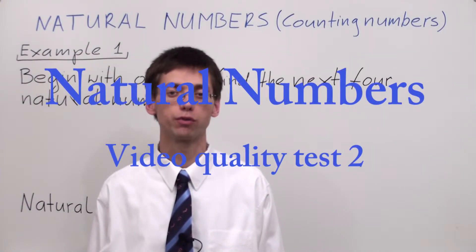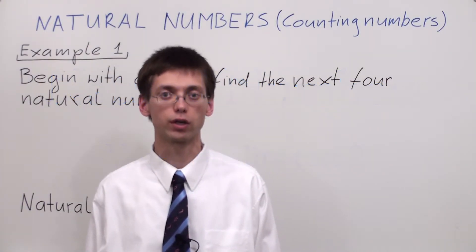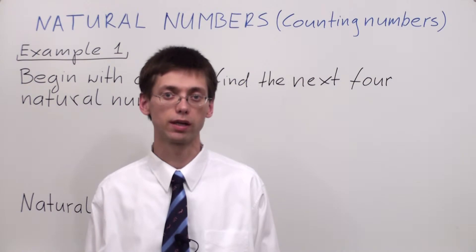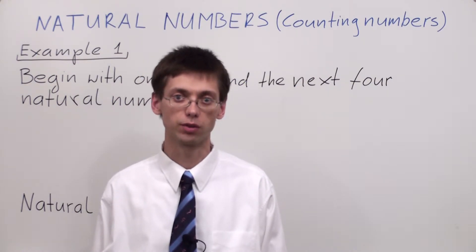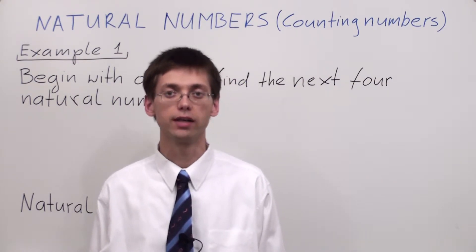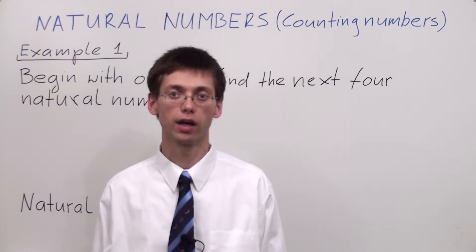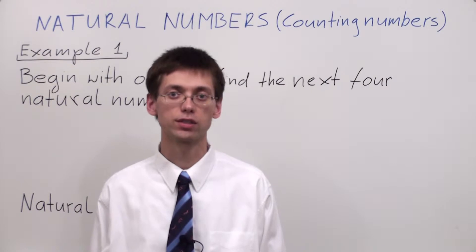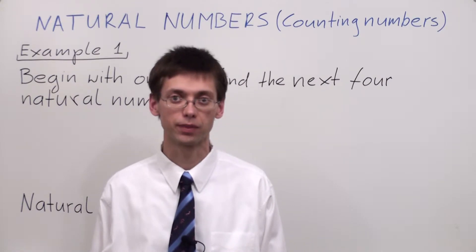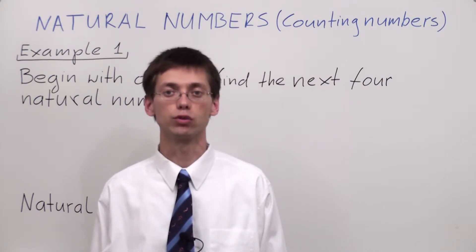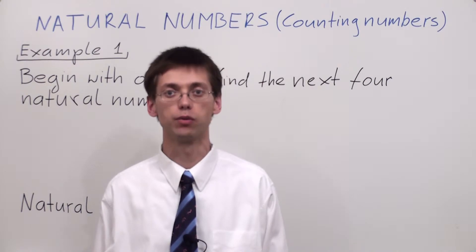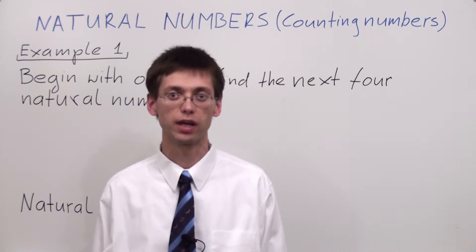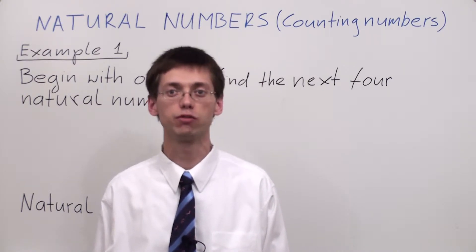Numbers which we use for counting we call natural numbers, or counting numbers. Any time we count, we start with the number 1. If we want to find the next larger natural number, we simply add 1 to the previous one.